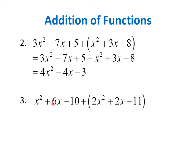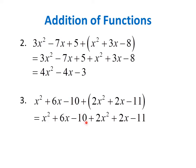Lastly, we have x squared plus 6x minus 10, and we have to add to that the function 2x squared plus 2x minus 11. If we distribute this positive sign to each term of the second function, the terms will retain their original signs, so we only have to copy the terms: x squared plus 6x minus 10 plus 2x squared plus 2x minus 11. Combining the x squared terms: 1x squared and positive 2x squared gives 3x squared. Then 6x plus 2x gives 8x. Negative 10 minus 11 is negative 21.